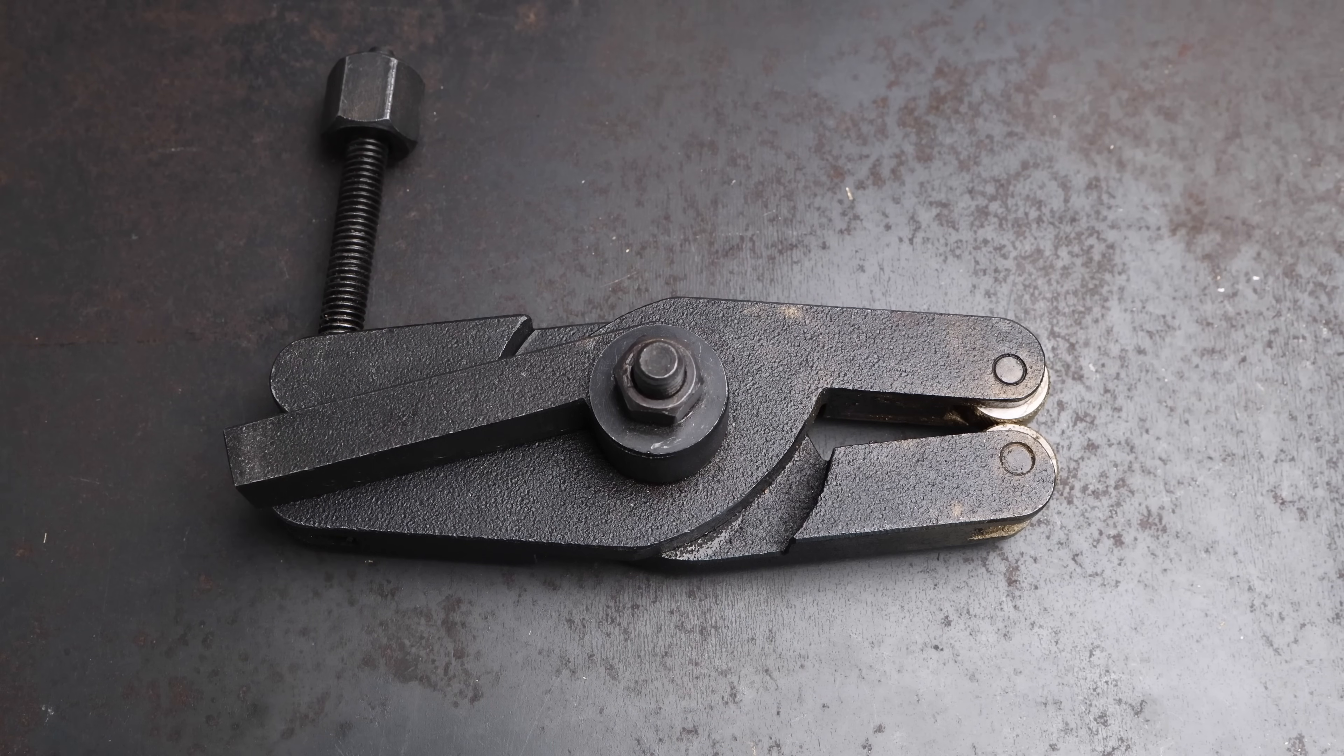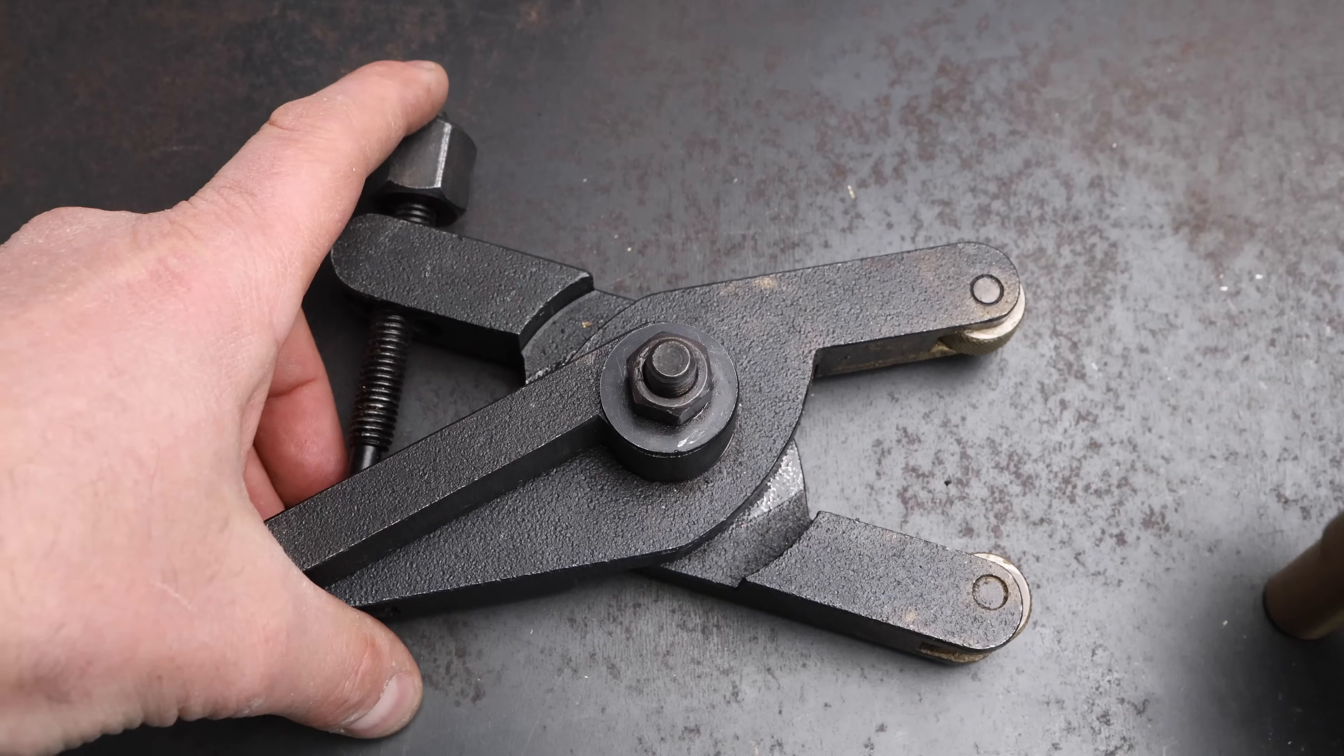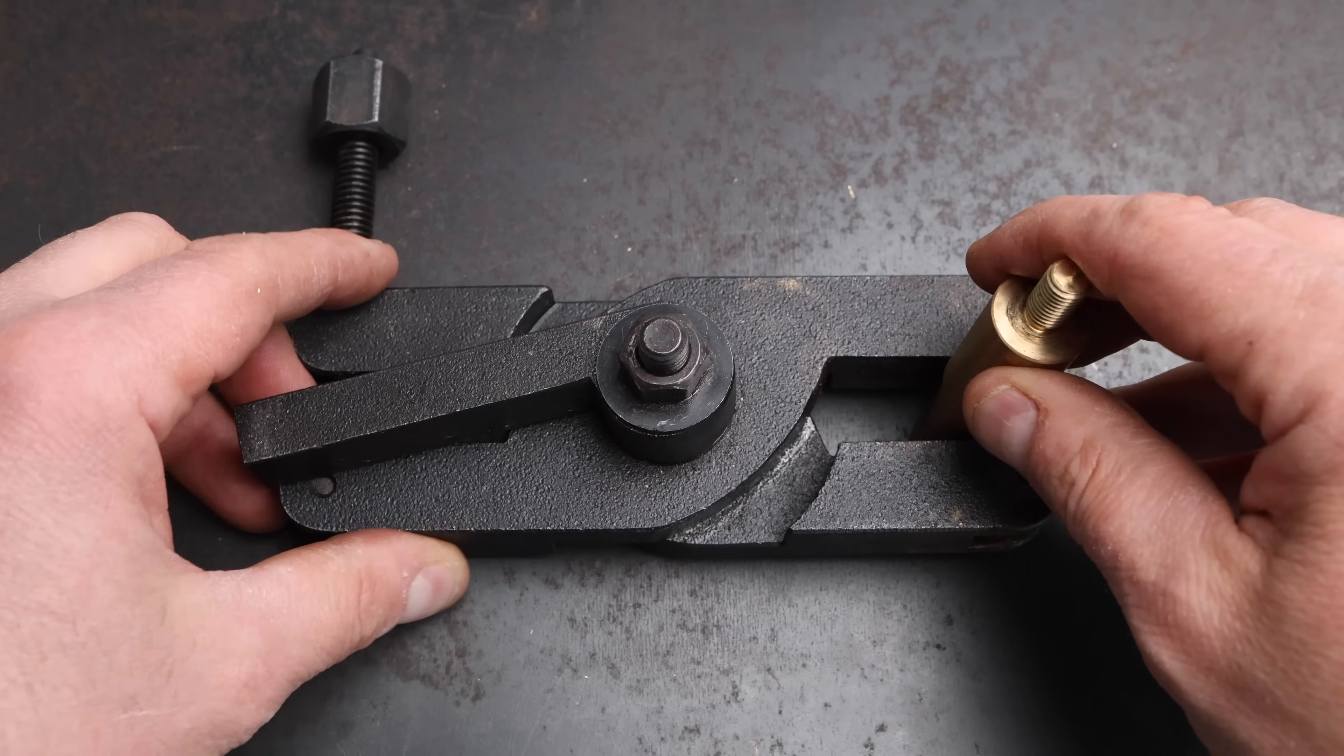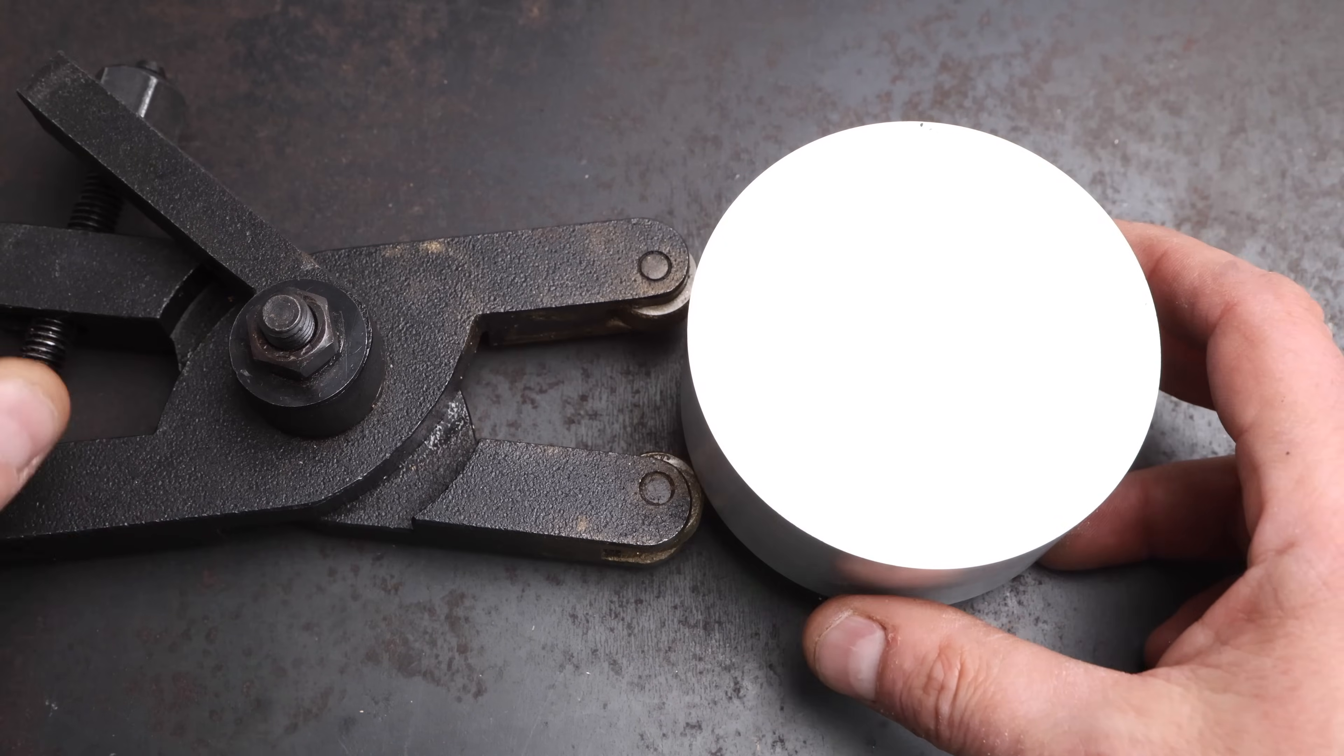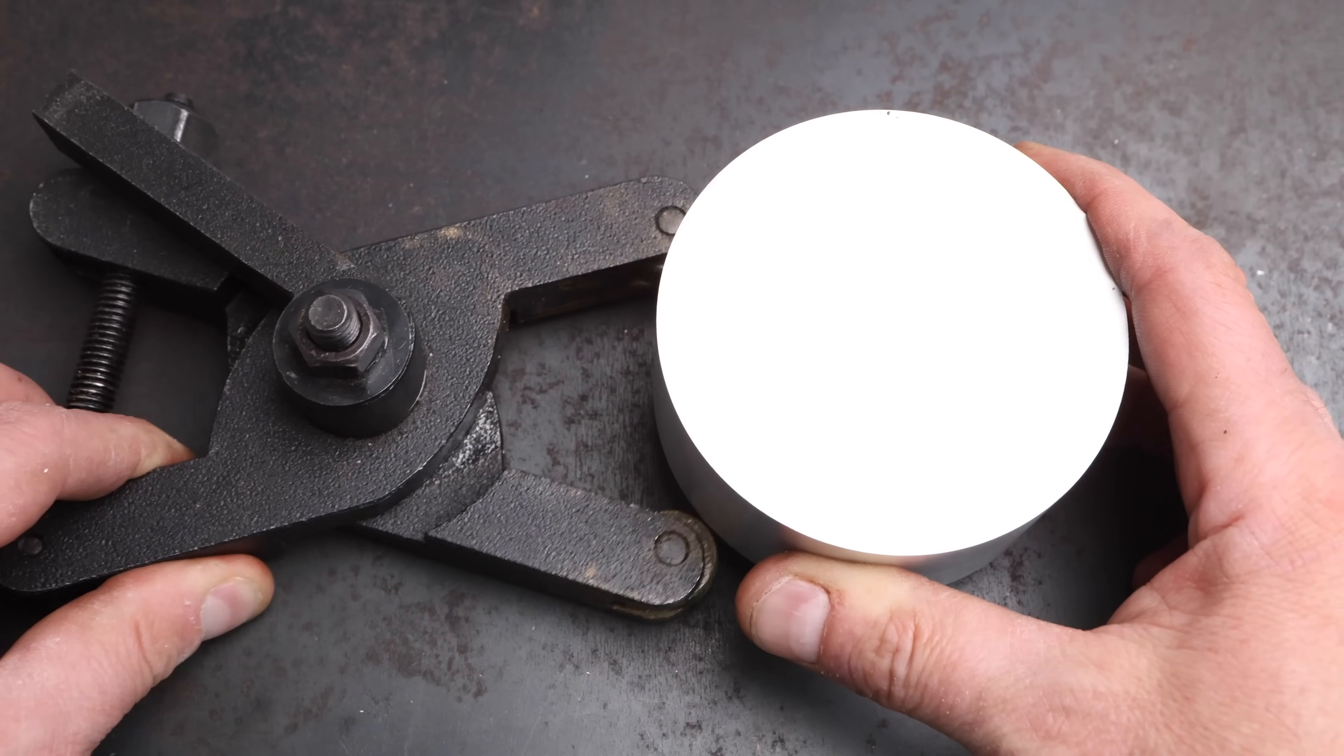This is my knurling tool and it's a scissor type knurling tool. You mount this in the tool post of the lathe and you open up the scissors. The scissors clamp down on the rotating workpiece in the lathe and the knurl is cut. Now that's all well and good until you consider the diameter of the workpiece we want to knurl. This clearly does not compute so we're going to need to find a different way.